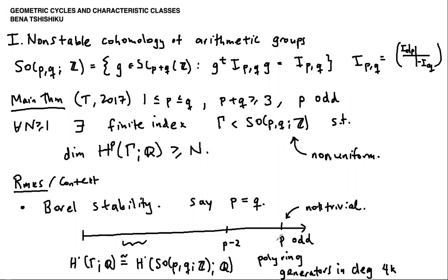The classes being produced by the main theorem, in addition to lying outside of the stable range, are not in the algebra generated by the stable classes. The stable classes have even degrees, and so even in the algebra they generate you don't find things in this odd degree.